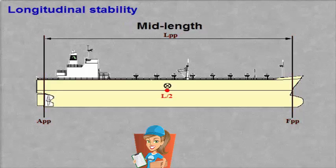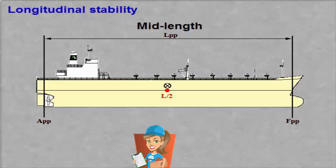In the middle of the perpendiculars, we have the so-called mid-length of the ship. This is found by dividing the distance LPP in two.